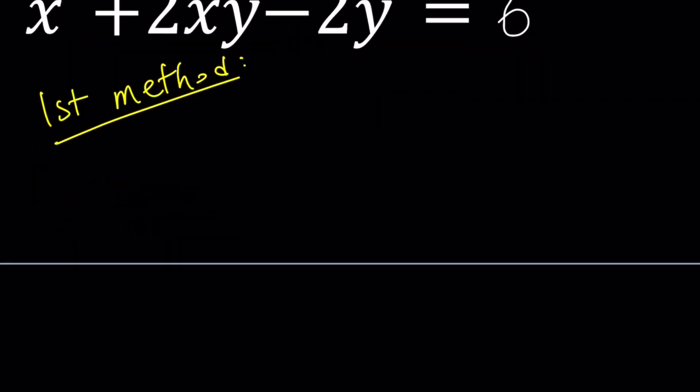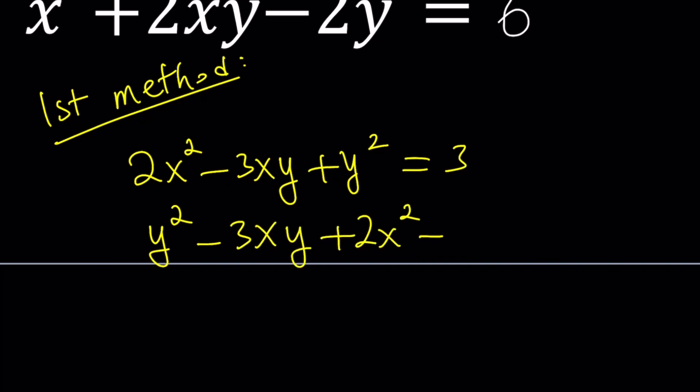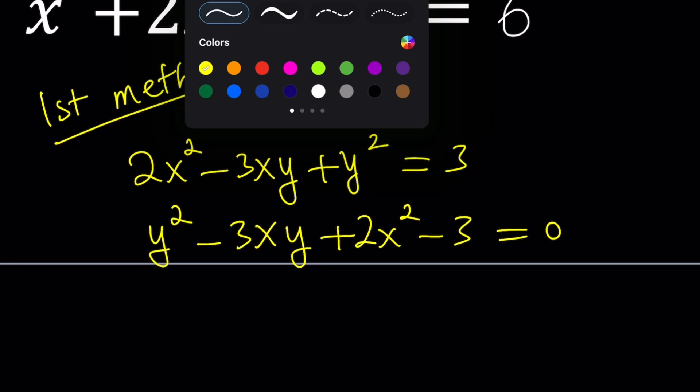Now how can I isolate y from the first equation? Let's go ahead and rewrite the first equation. Notice that this is quadratic in y. So if you write it like this, y² - 3xy + 2x² - 3 = 0 then you're going to be able to solve for y because this is quadratic in y. Let me show you what that means.